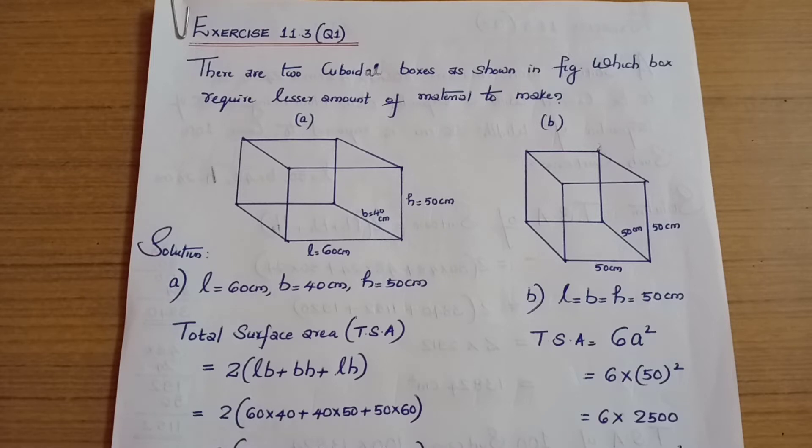There are two cuboidal boxes as shown in figure. Which box requires lesser amount of material to make - box A or box B?